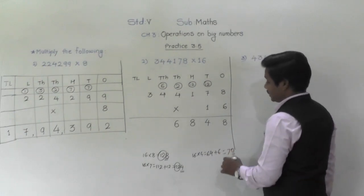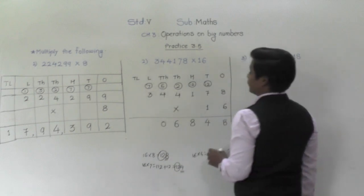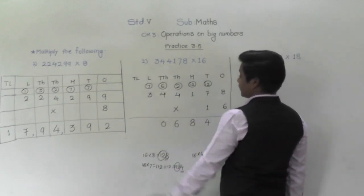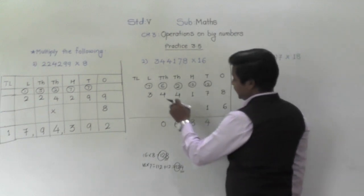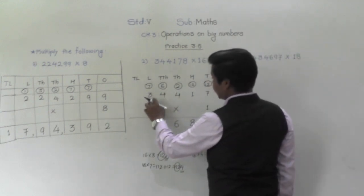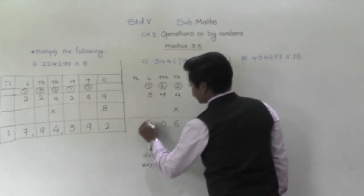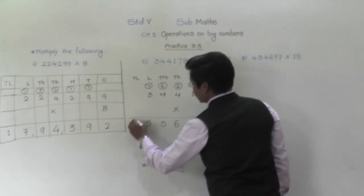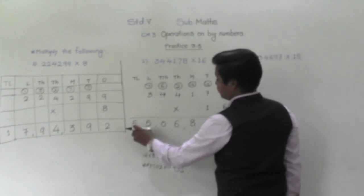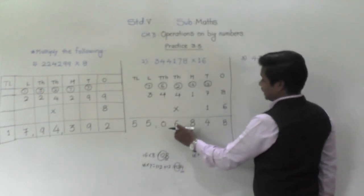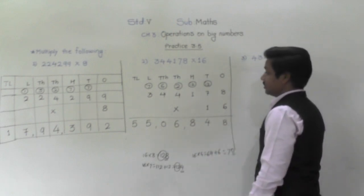16 threes are 48. 48 plus 7 is 55. So the answer is 55,06,848.